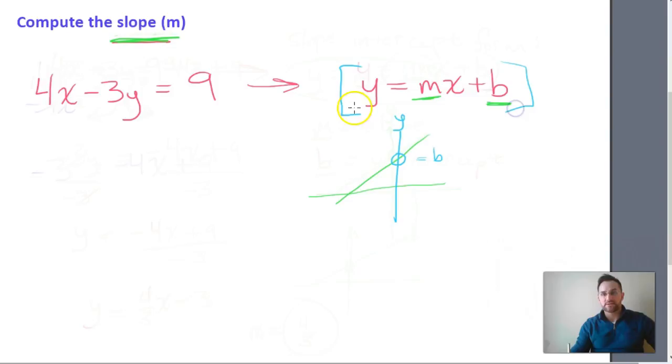And by solving for y, it's going to allow us to isolate whatever that coefficient for x is going to be, which is going to give us a slope. So we need to rearrange this so that y is on this side of the equation, and we have the form of m times x plus b on this side of the equation.